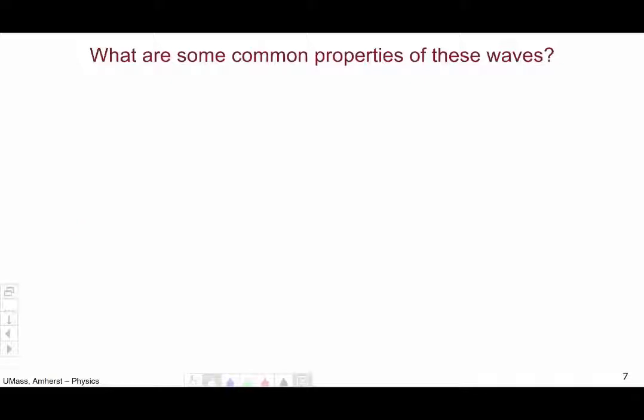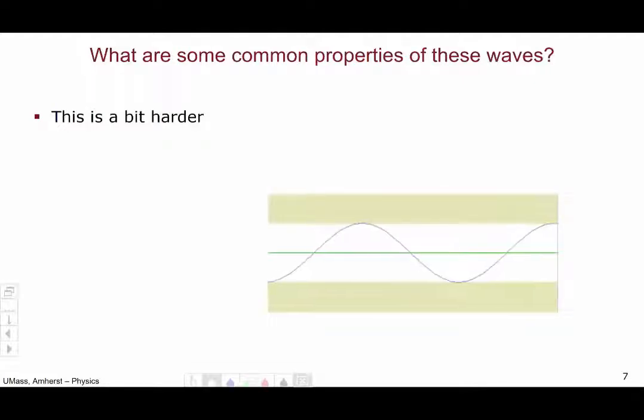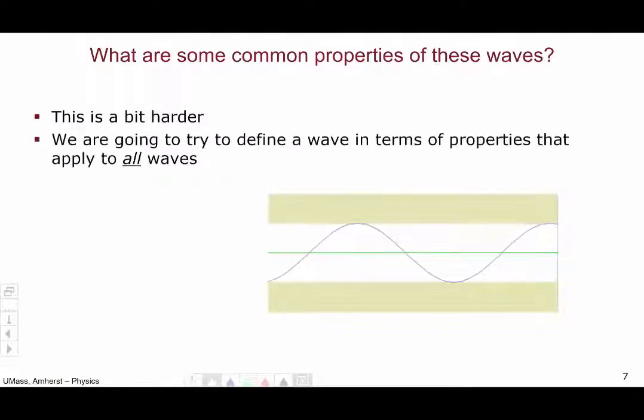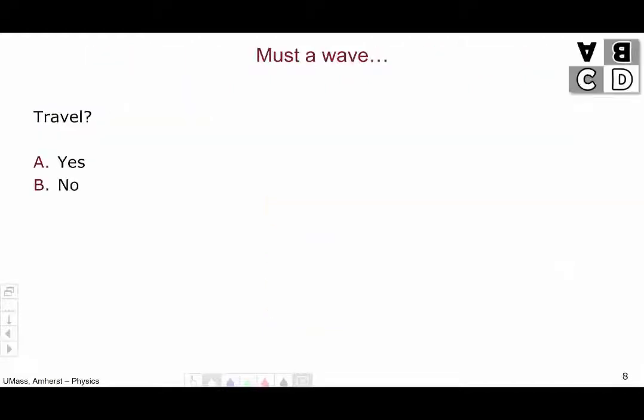So our goal is to produce some common properties of all waves. And this is going to be somewhat challenging, actually, definitely more challenging than for particles. So this is probably the most generic picture that a lot of you have, some sort of sine or cosine shape traveling along. But this is not representative of all waves. And we want our definition to be in terms of properties that apply to every possible wave that we can think of. So let's go through a few questions and develop a definition of a wave.